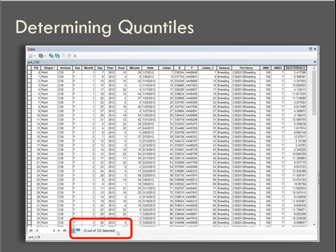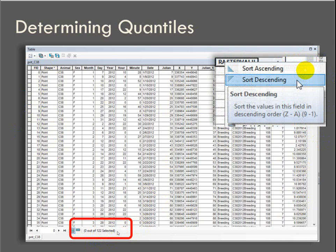How do we determine the quantiles? This is the attribute table from just one animal's set of points after running the KDE tool in ArcMap. We're going to sort the raster value field. Note that there's 122 records for this animal. We've already run the Extract Values to Points tool, so we're looking at a point attribute table, vector data, but we've got our density value here.